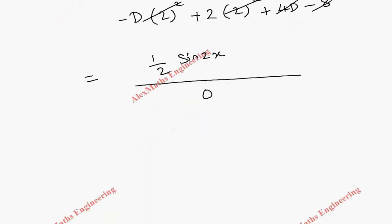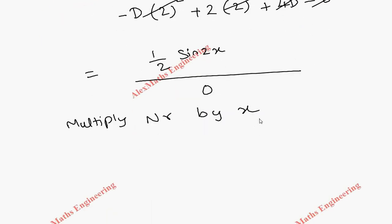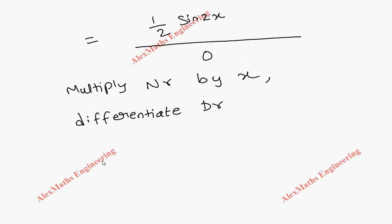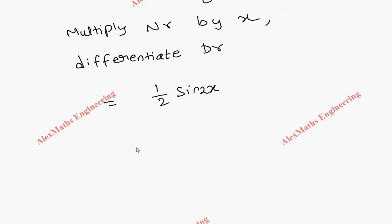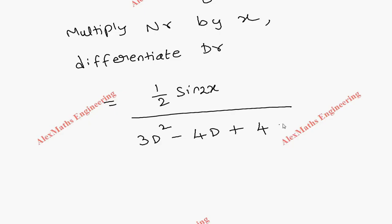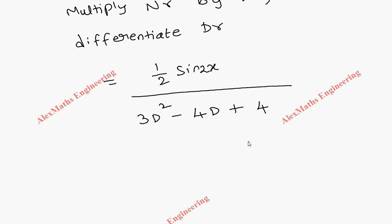Since the denominator is 0 again, we multiply the numerator by x and differentiate the denominator. The differentiated denominator is 3d squared minus 4d plus 4. So we now have x times half sin 2x divided by 3d squared minus 4d plus 4, and once again wherever d squared appears we substitute minus 4.